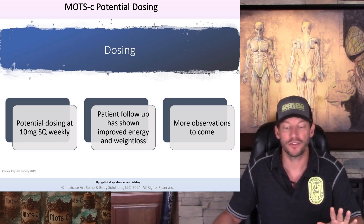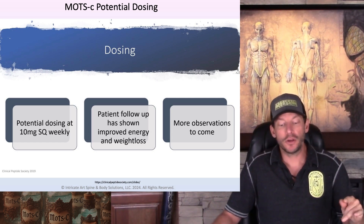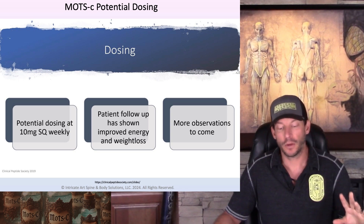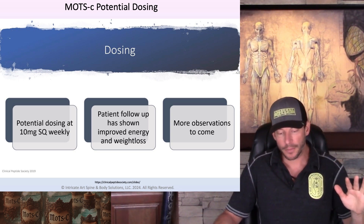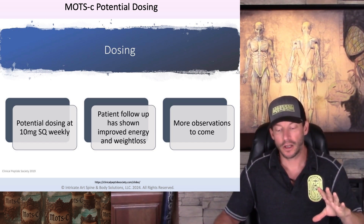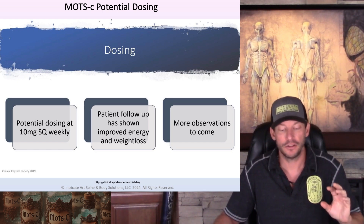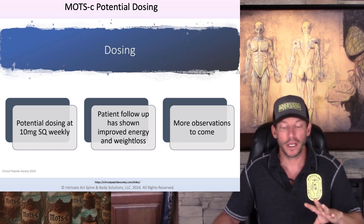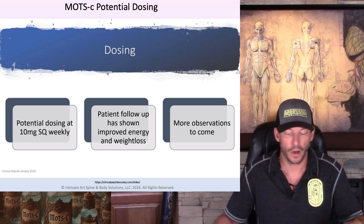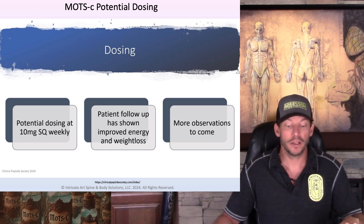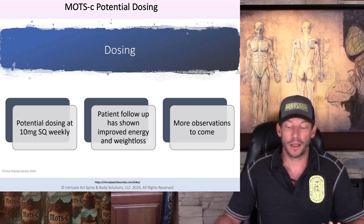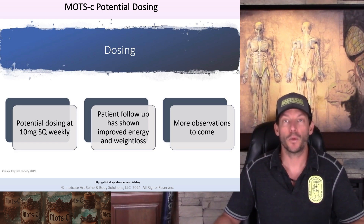For potential dosing of MOTC: epithalon is the only one really spoken about as being done only once or twice a year. Other peptides like BPC-157, thymosin beta-4, and thymosin alpha-1 can be done on a weekly dosing schedule. Most doctors, including Dr. Edwin Lee, talk about doing it on a rotational schedule — a month or two on, a month or two off. Dr. Lee uses 10 milligrams subcutaneously weekly and discusses this one for improved energy and weight loss.